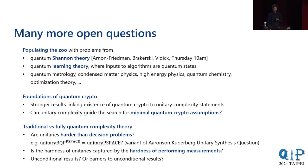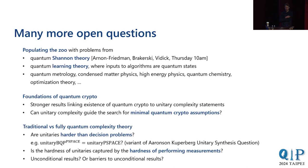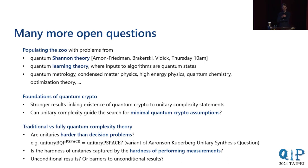Thank you very much, Tony, for that wonderful talk. We have a few minutes for questions. So you said that the quantum crypto assumption should be falsifiable, but I think pseudorandom state generators are not falsifiable in your definition. The response: maybe you could do something like you fix any polynomial and do polynomial t-designs for that polynomial — I haven't thought about it carefully, but that would be the first thing that comes to mind.